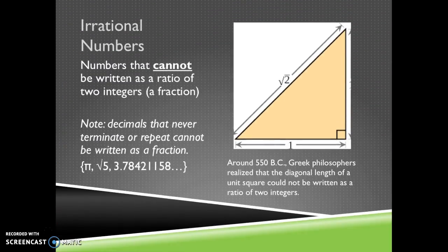Irrational numbers are the final type of number we're going to look at today. These are numbers that cannot be written as a ratio of two integers. If you can't write this number as a fraction, integer over integer, then we call it irrational. Decimals that never terminate or repeat cannot be written as a fraction. These even got invented before zero. Around 550 BC, Greek philosophers realized a diagonal length of a unit square can't be written as a ratio of two integers. They were able to prove this and said, oh no, okay, I guess we need this new type of number we didn't know existed. Irrational numbers.